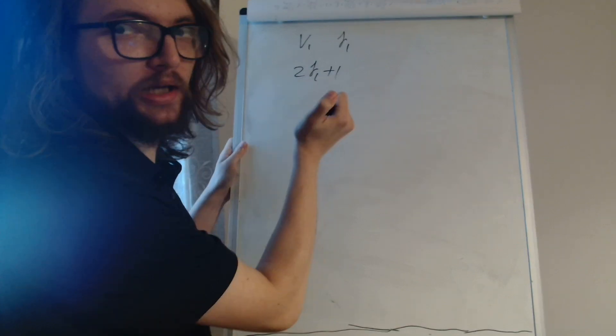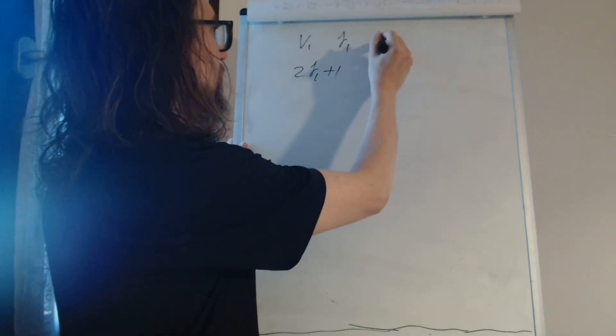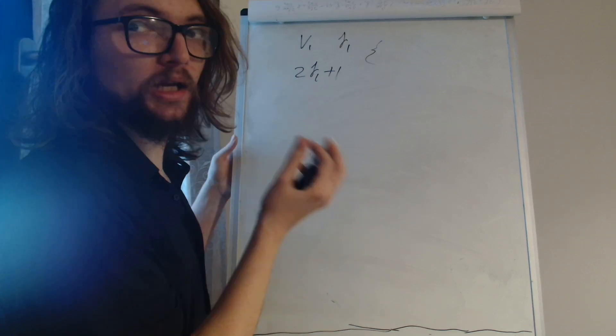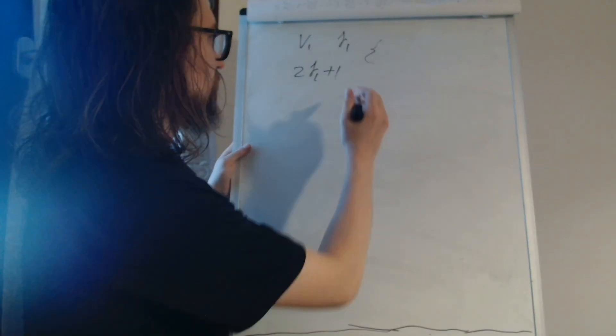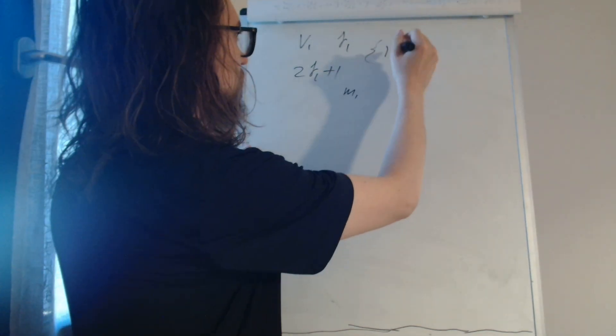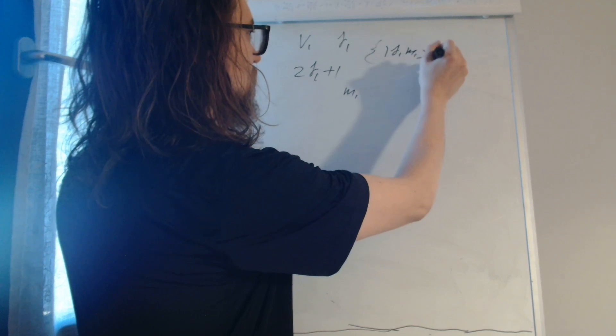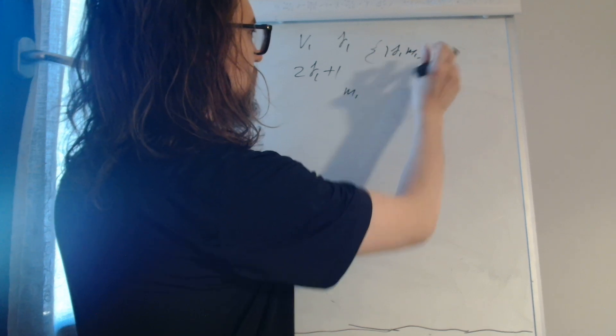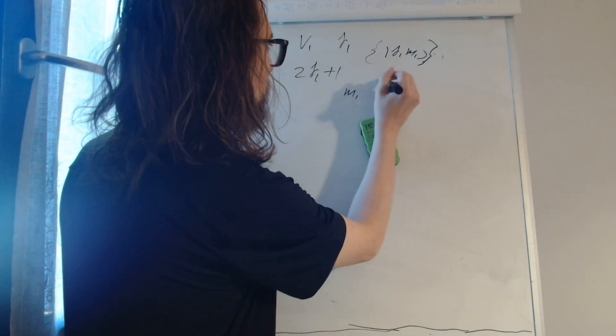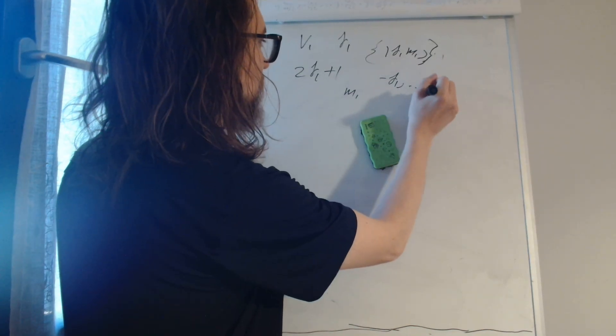We parameterize this with the spin in a particular direction which we call M1. The parameters are like this: J1, M1, and M1 can take values from minus J1 to plus J1.